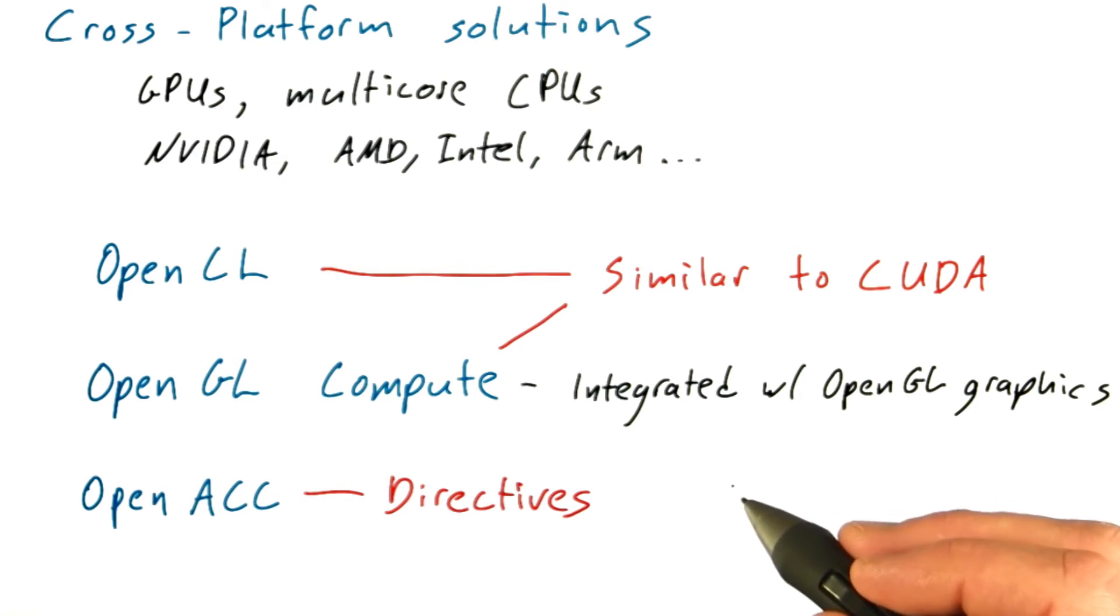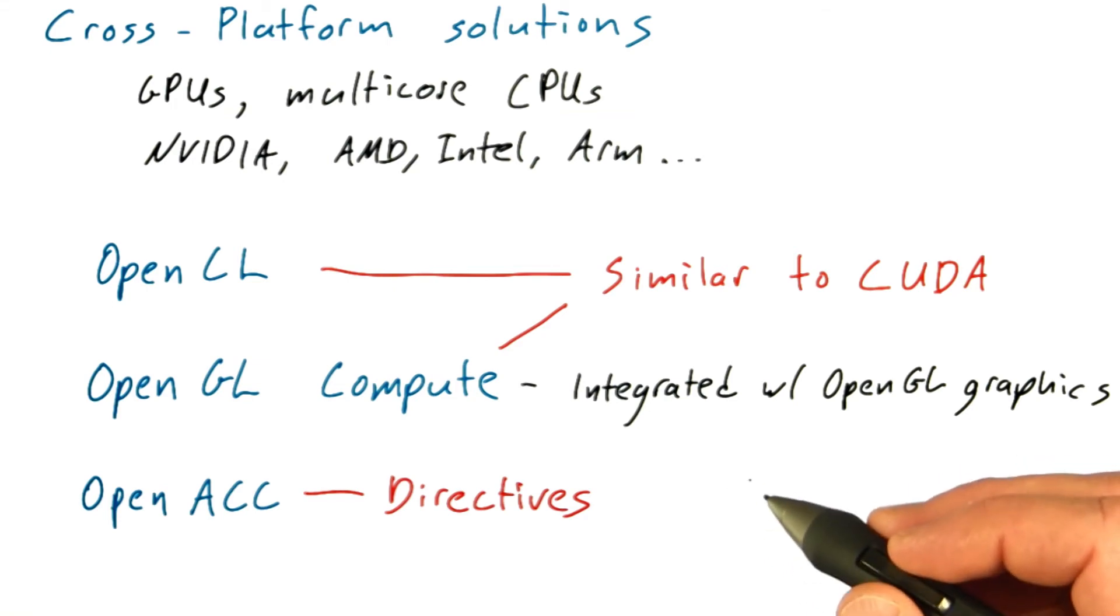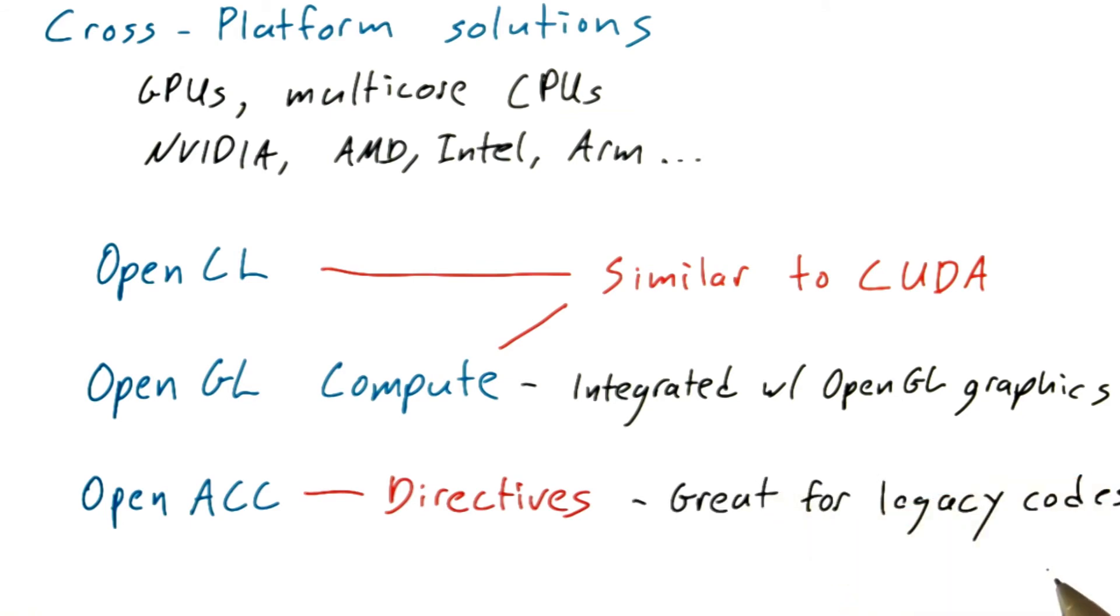For example, with the appropriate directives, an OpenACC compiler can transform a nested for loop into a thread launch on CUDA, or a multi-threaded SIMD routine on a multi-core CPU. So often adding just a few lines to an existing code base can get dramatic speed-ups, and this is what makes OpenACC a great choice for programmers that have large legacy code they want to parallelize.